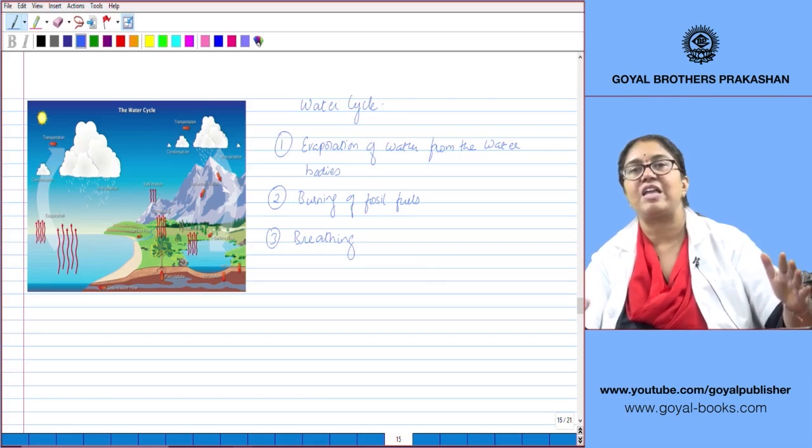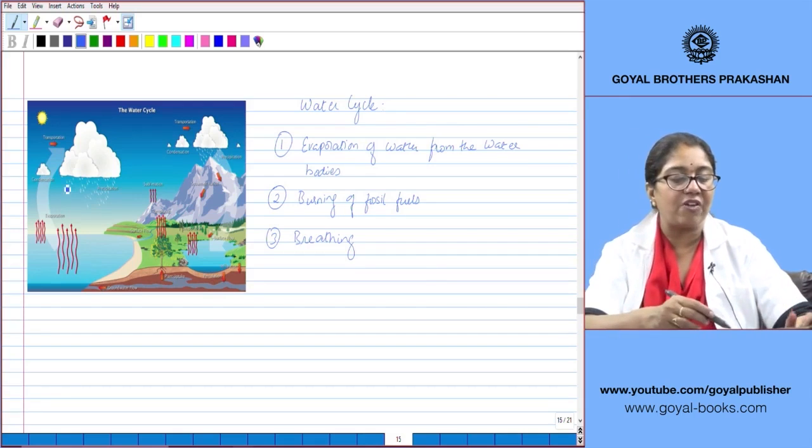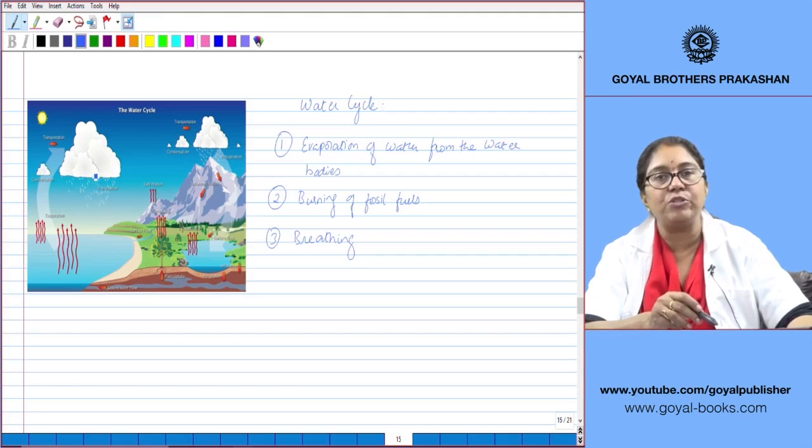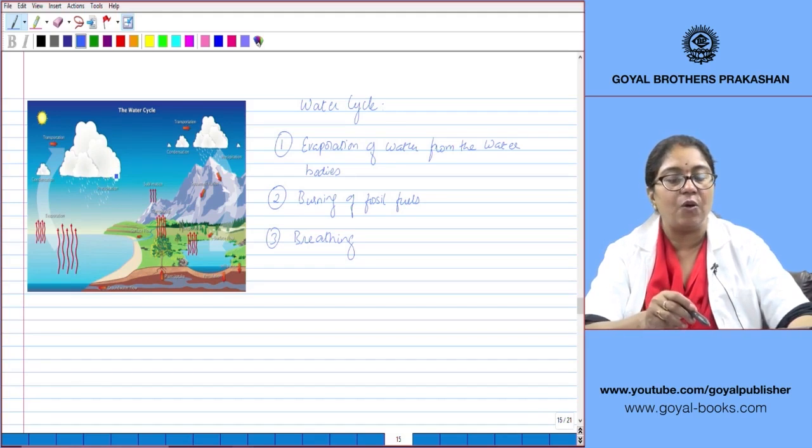This water vapor which has entered the atmosphere, being lighter than air, rises into the upper layers. Because of the cooler temperature, it condenses to form water droplets. All these water droplets collect together to form clouds.